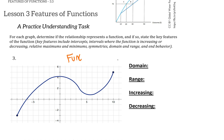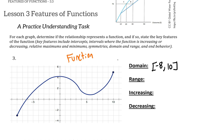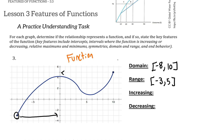Since this is a function, we can analyze its features. The domain is the set of X values — the furthest left the graph goes is negative 8, and the furthest right is 10. We use square brackets because both endpoints are included, shown by closed dots. For the range, the lowest point has a Y value of negative 3 and the highest is 5. The lowest and highest points happened to coincide with the leftmost and rightmost points, but that isn't always the case.